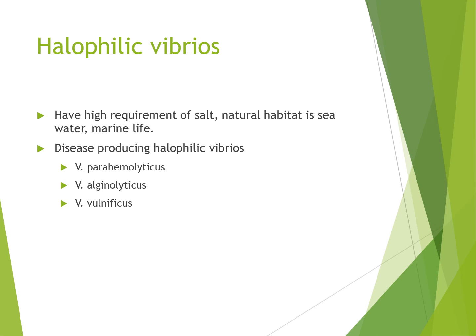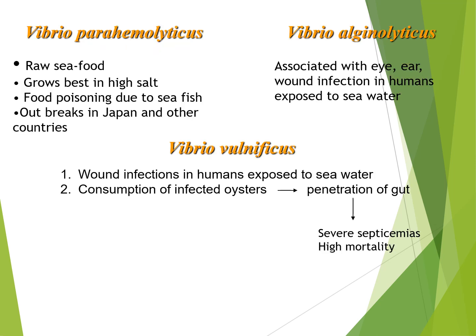Other types of Vibrios include halophilic vibrios, which have high salt requirements and a natural habitat of sea water and marine life. Disease-producing halophilic vibrios include Vibrio parahaemolyticus, Vibrio alginolyticus, and Vibrio vulnificus. Vibrio parahaemolyticus is transmitted via raw seafood, grows best in high salt, and causes food poisoning from sea fish. Vibrio alginolyticus is associated with eye, ear, and wound infections in humans exposed to sea water. Vibrio vulnificus causes wound infections in humans exposed to sea water and also from consumption of infected oysters, which can penetrate the gut resulting in severe septicemia and high mortality.